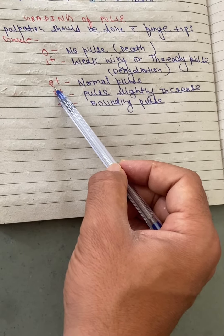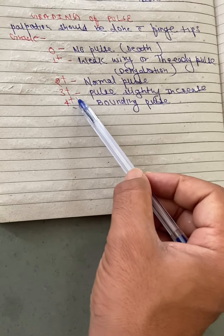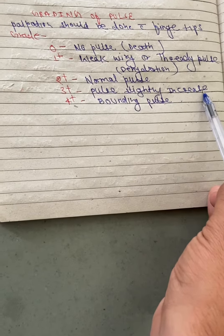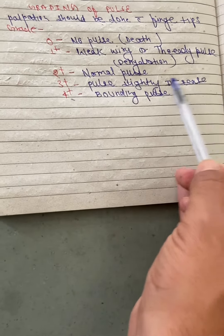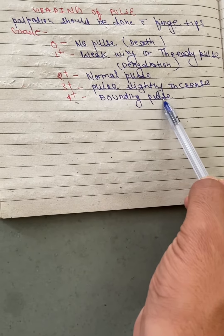Grade 2 Plus is normal pulse. Grade 3 Plus means pulse is slightly increased, meaning slightly more than normal. Grade 4 Plus shows bounding pulse.